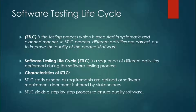The abbreviated form of Software Testing Life Cycle is STLC. It is executed in a very systematic and planned manner. In the STLC process, different activities are carried out in order to improve the quality of the product or software. A sequence of different activities is performed one after another during the software testing process. It generally starts as soon as the requirements are received or defined by the stakeholders or the business. It is a step-by-step process to ensure the quality of software.